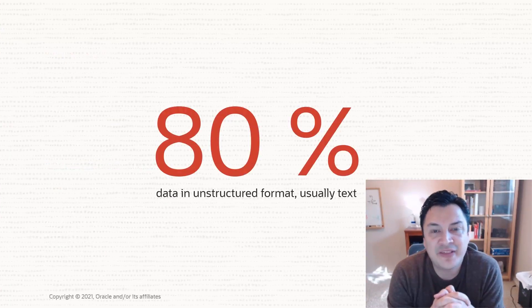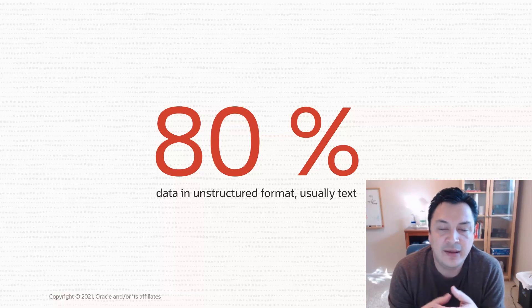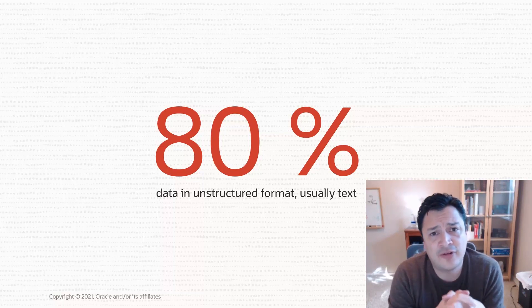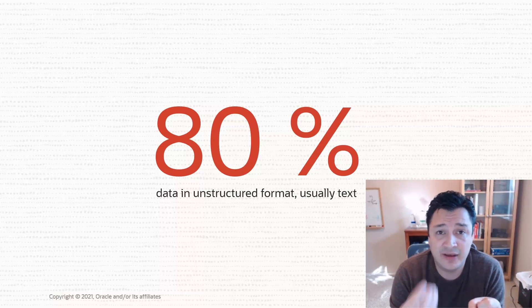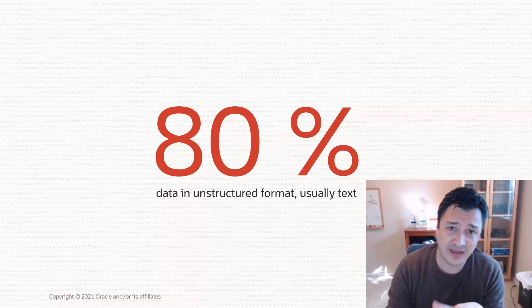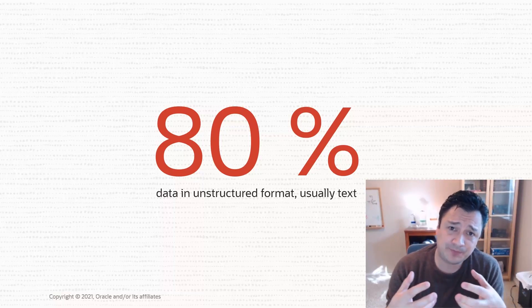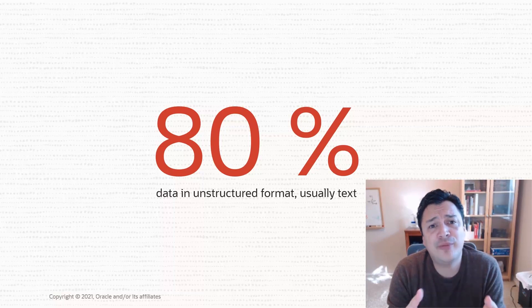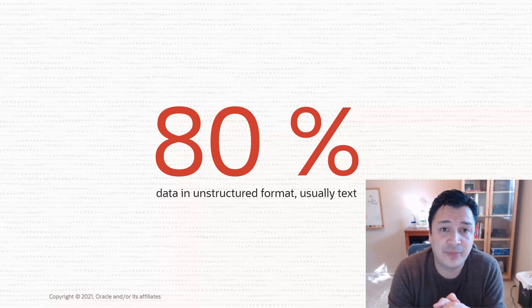About 80% of the world's data is in some kind of unstructured format. Usually it's text, but there are all kinds of unstructured data out there — images, speech files, forms, all kinds of different types of documents. And usually you need to transform that information before it becomes useful to you so that you can get insights out of it.